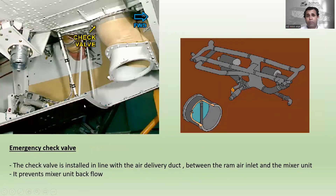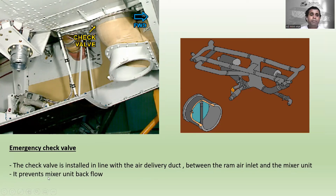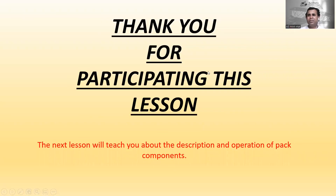Here you can see the emergency check valve — this is the normal view, and it is situated here. The check valve is installed in line with the air delivery duct between the ram air inlet and the mixture unit. It prevents mixer unit backflow.